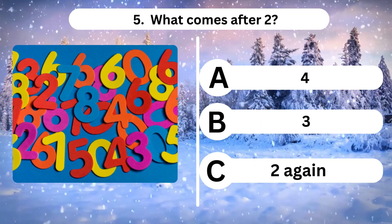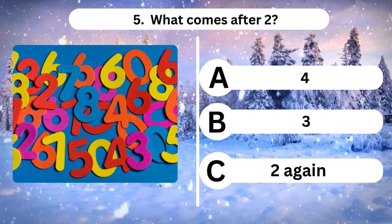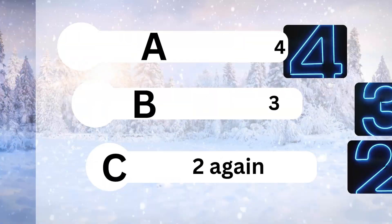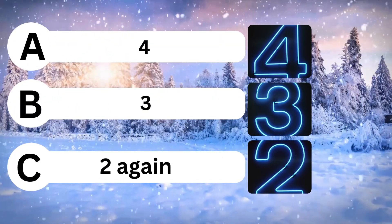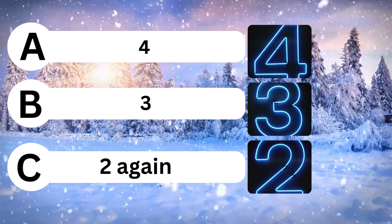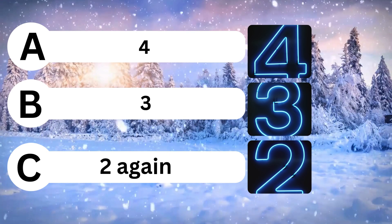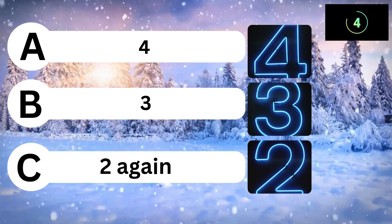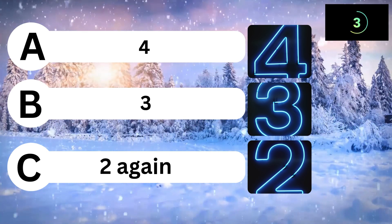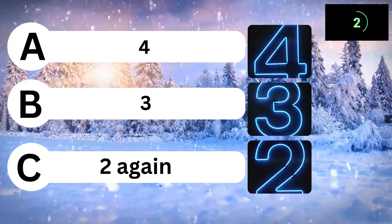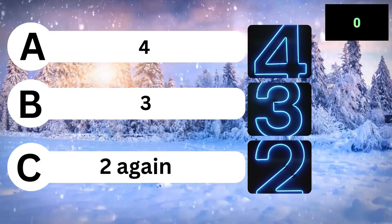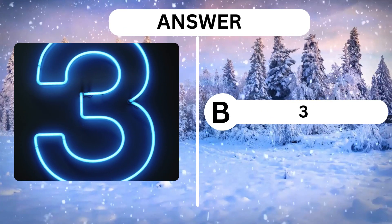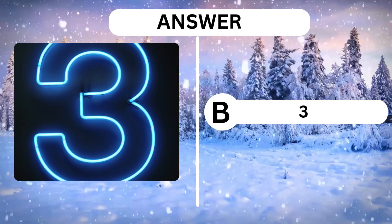Question 5. What comes after 2? A, 4. B, 3. C, 2 again. Answer is B, 3.